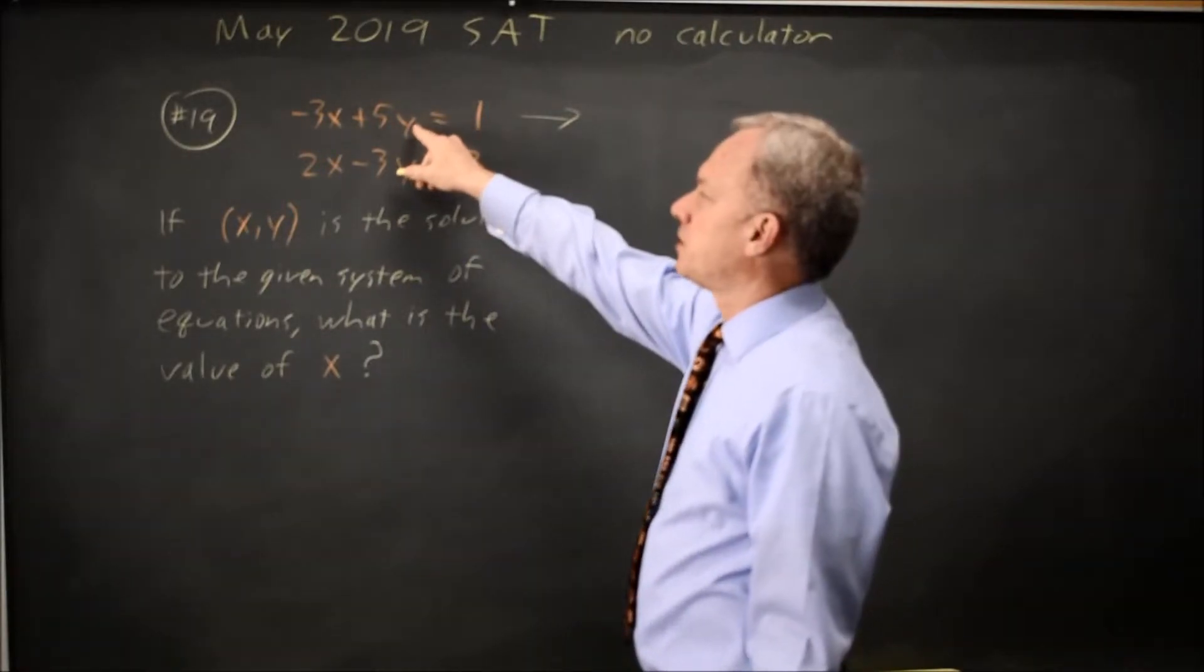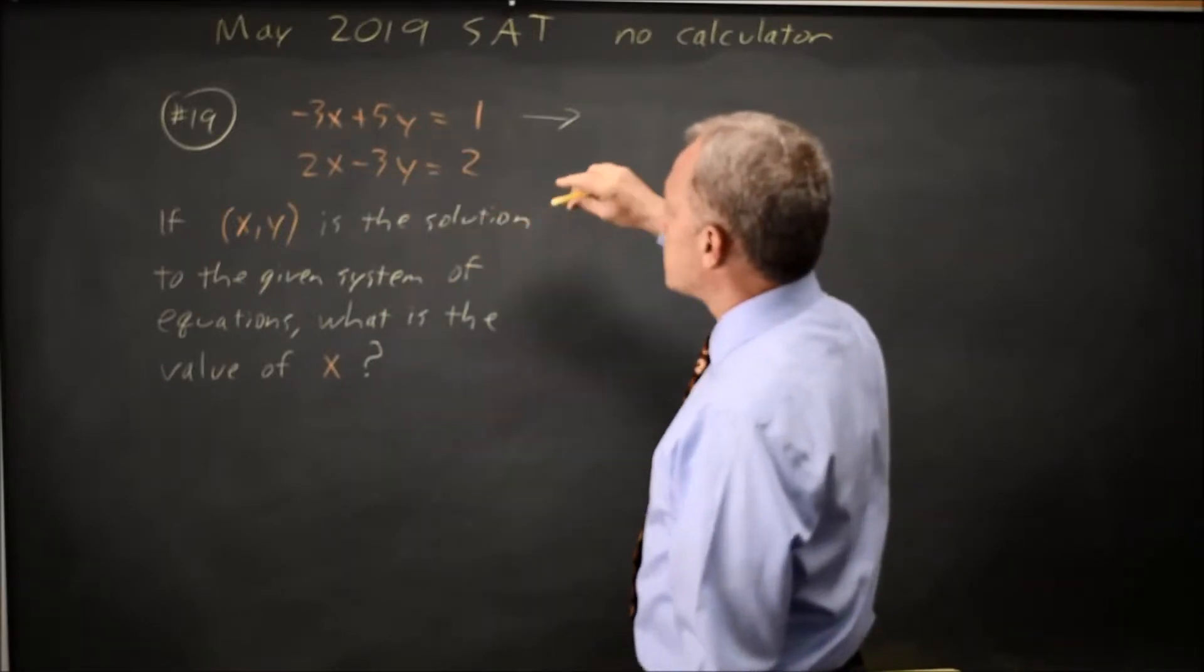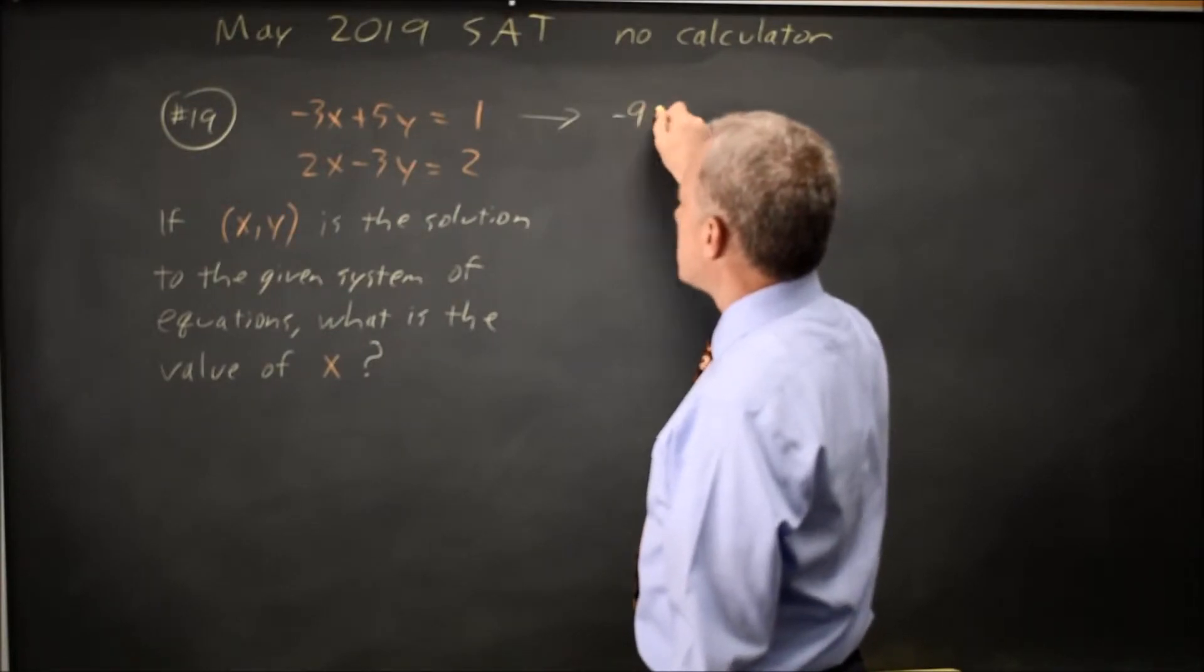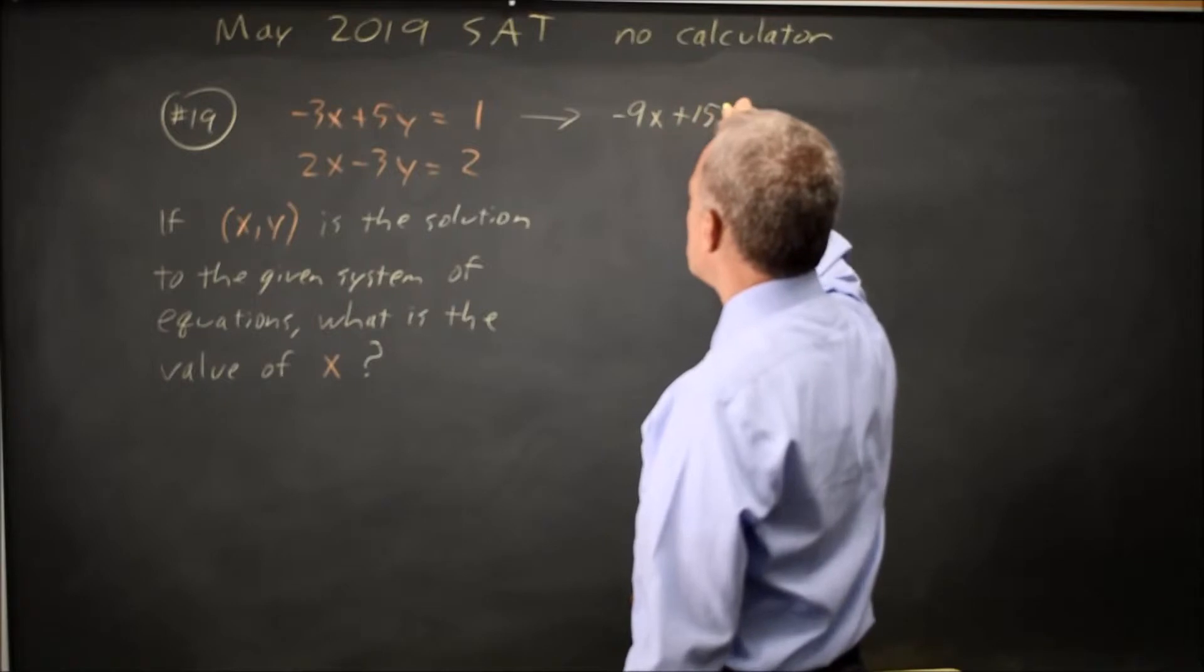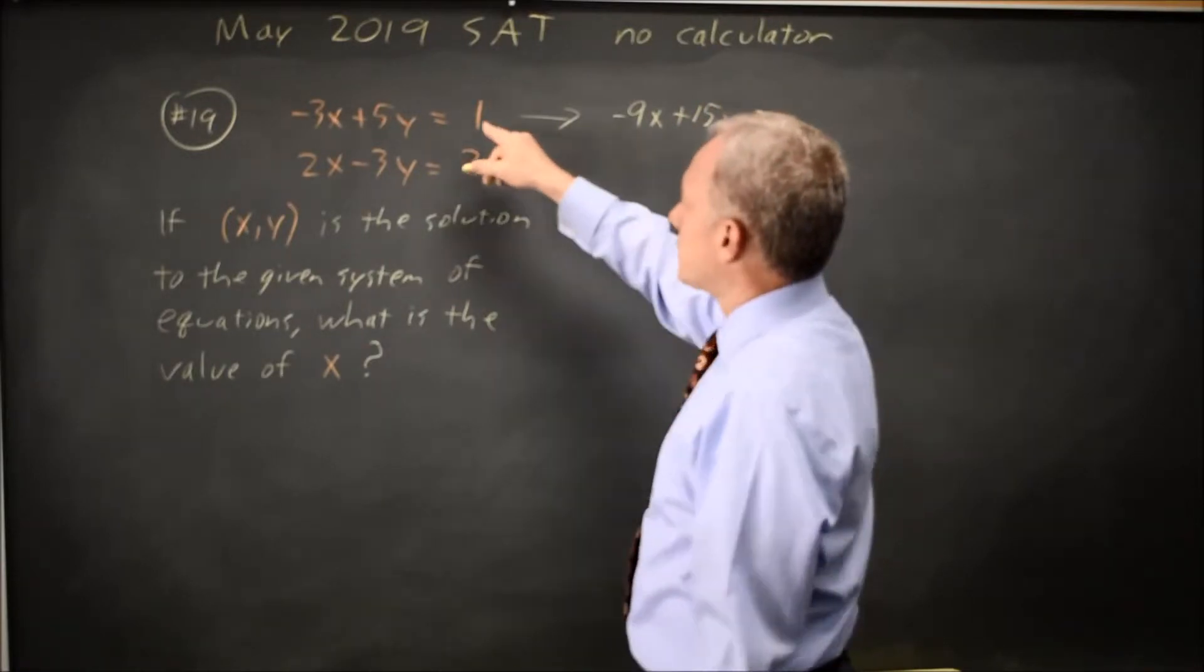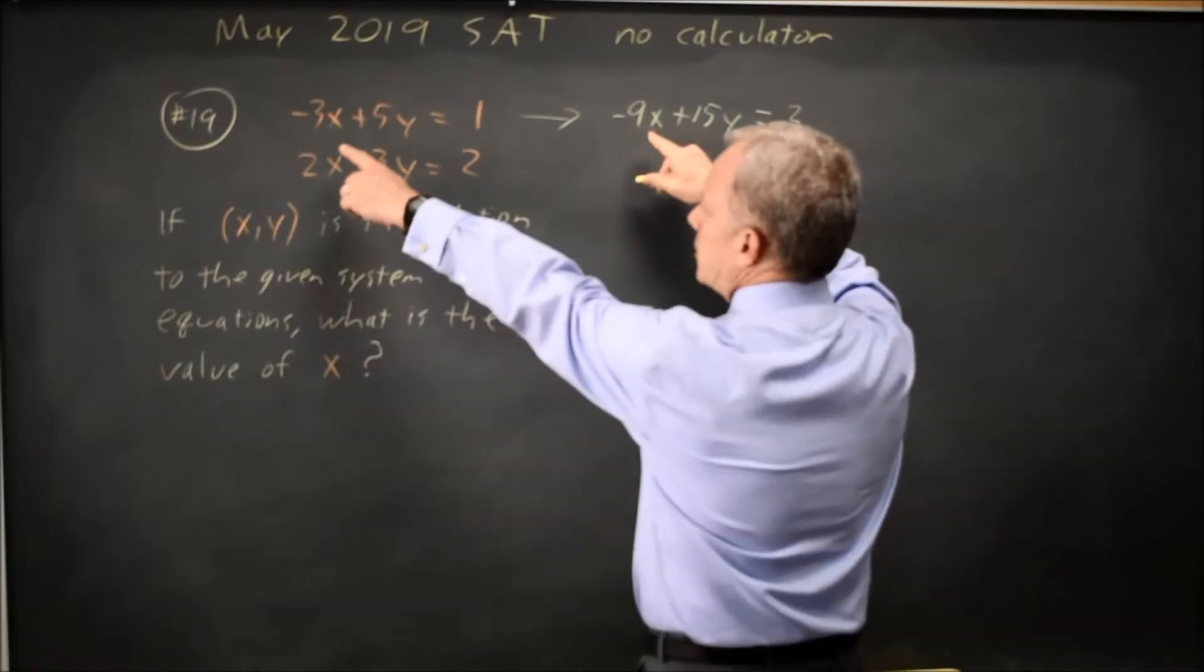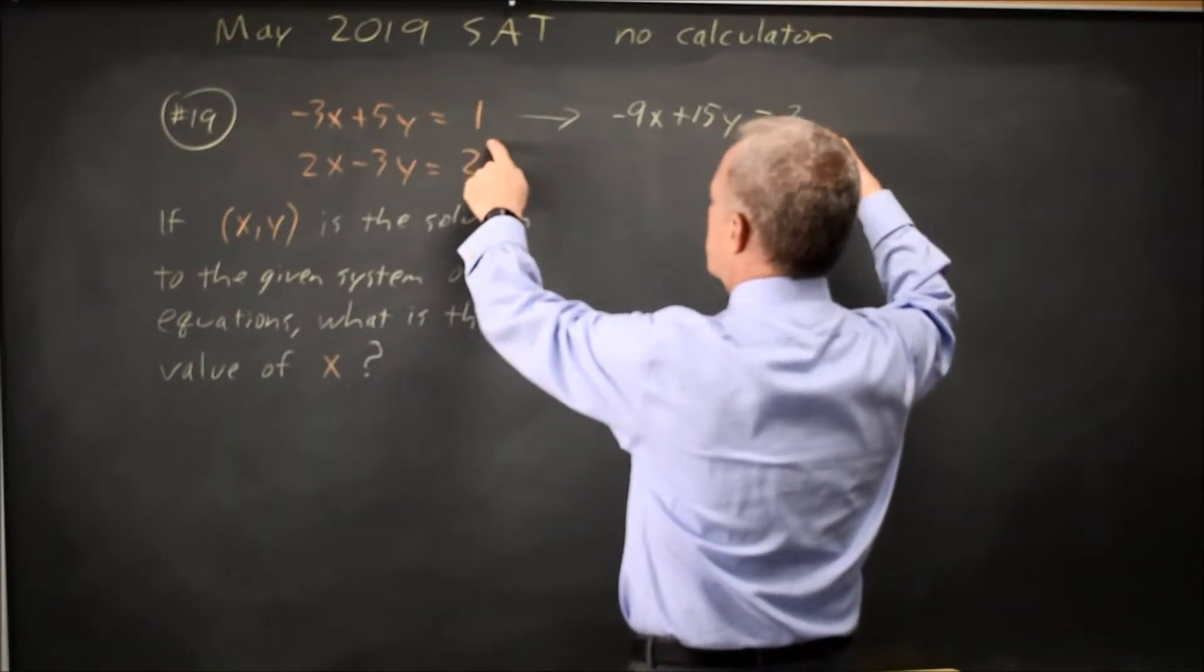If I multiply the first equation by positive 3, negative 3x times 3 is negative 9x, 5y times positive 3 is 15y, and remember to multiply the right-hand side by 3 also. So I multiply by 3 to get negative 9x, multiply by 3 to get 15y, multiply by 3 to get 1.